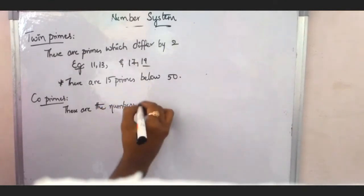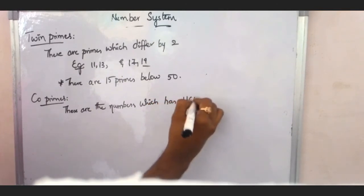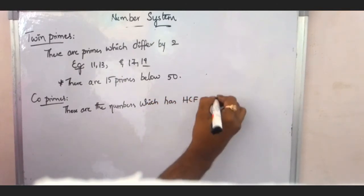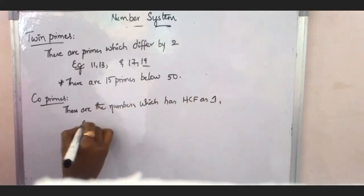Next, 17, 19. Here are the prime numbers. And what are the differences? 2. So, here are the important point.